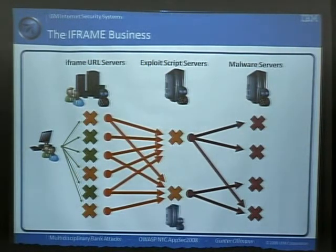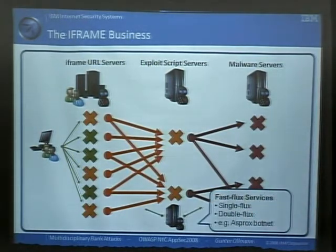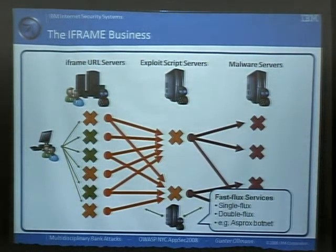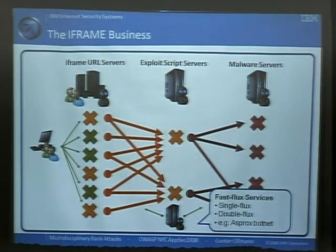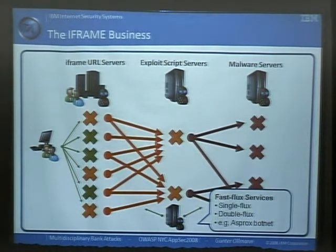It gets even tougher because there's another ecosystem providing fast flux services — single or double fast flux — that then protects all of these compromised hosts from being taken down. That's the framework for getting those millions and millions of hosts compromised.